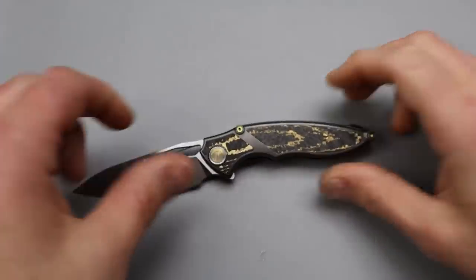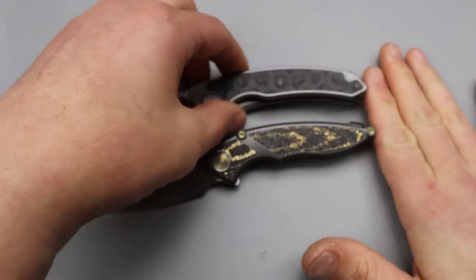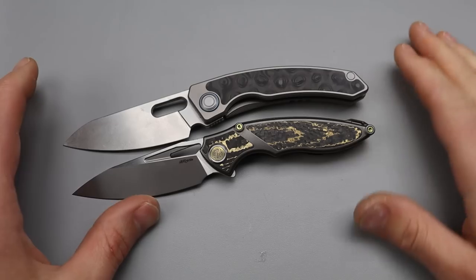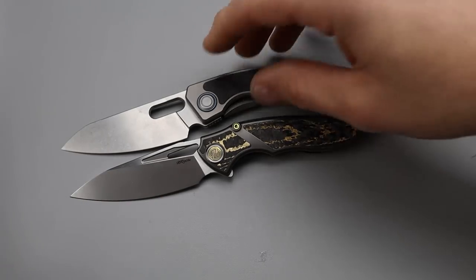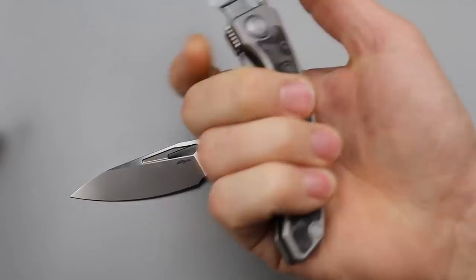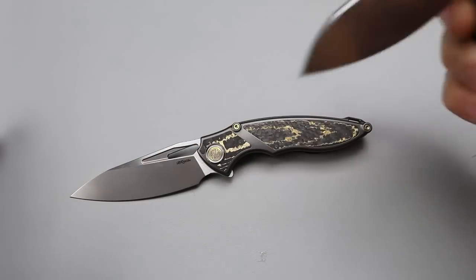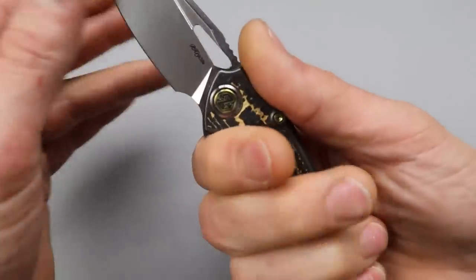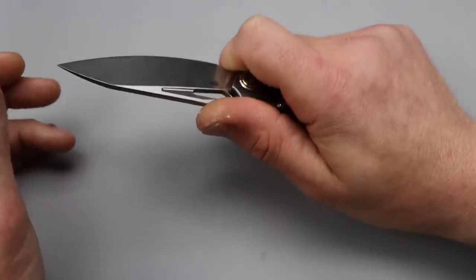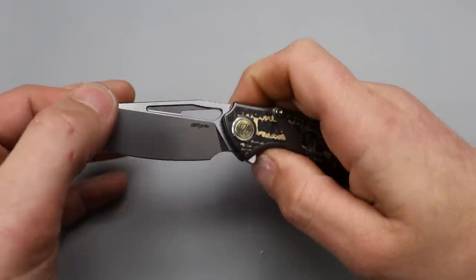Just to compare it to the Max Ace really quick, the Max Ace and the Rike are very similar in size. The Max Ace is a little bit beefier, a little bit bigger, but especially because this one has the flipper tab. But like I said, you can take advantage and go right over the top of it.